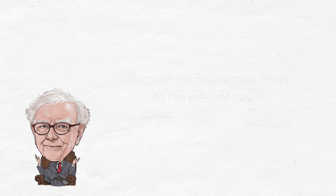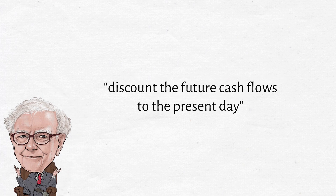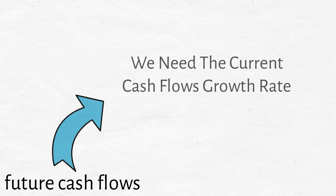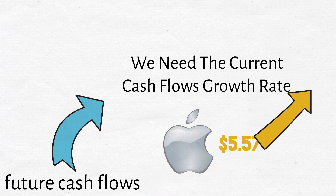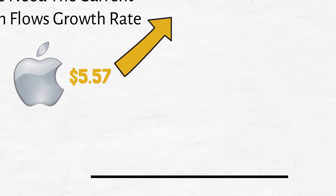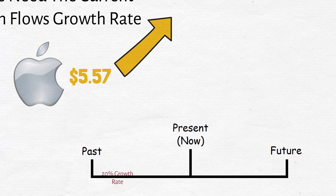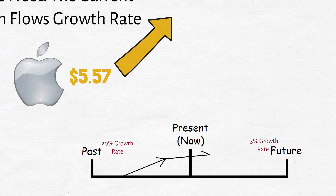Remember that Buffett said to calculate the intrinsic value, you need to discount the future cash flows of the business. In order to know the future cash flows, we need to know how much the current cash flow is going to grow by. One of the best ways of determining future growth rates is by looking at the growth rate in the past — then you can extrapolate this into the future. But you want to be more conservative and make it somewhat lower, since businesses grow faster at the beginning and then they start to slow down.